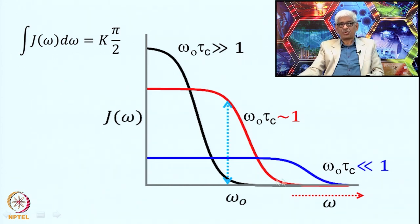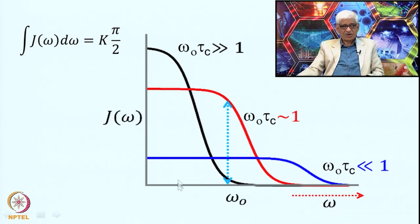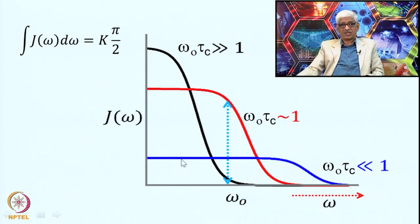Without going into greater detail, the final expressions for relaxation rates R1 (= 1/T1) and R2 (= 1/T2) involve the inter-nuclear distance R and the spectral density distribution. R1 has two spectral density terms: τc/(1 + ω₀²τc²) representing the single quantum transition, and 4τc/(1 + 4ω₀²τc²) representing the double quantum transition, since 2ω₀ corresponds to the double quantum frequency. For R2, there is a frequency-dependent term and a frequency-independent (zero-frequency) term.